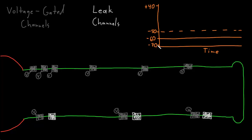When there is enough temporal and spatial summation of excitatory graded potentials to reach the threshold, here at the trigger zone — at the initial segment of the axon — we have temporal and spatial summation of excitatory potentials spreading across the membrane of the soma into the initial segment of the axon, the trigger zone.